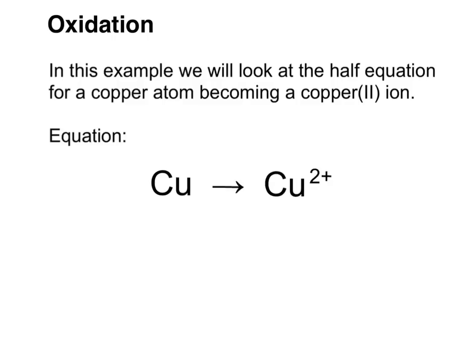First we're going to look at examples of oxidation reactions and their half equations. In this example we're looking at a copper atom becoming a copper 2+ ion. The first thing we have to do is check that we have the same number of atoms on the left and the right. Because there are no coefficients in front, we have one copper atom on each side, so the atoms are balanced.